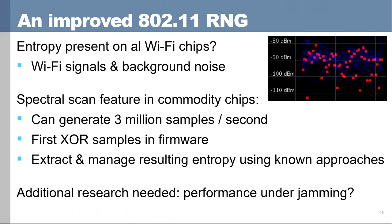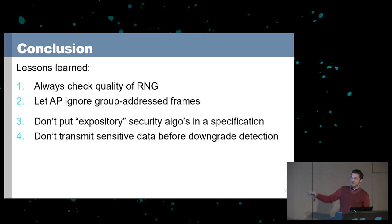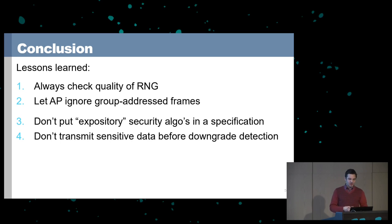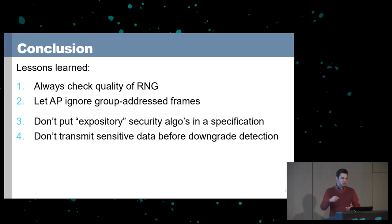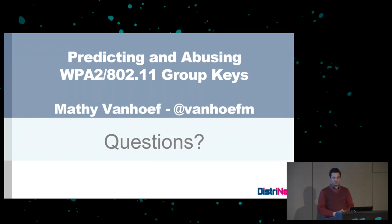That concludes my talk. A few important lessons: if you have an RNG, always check the quality of the output; don't put bad example algorithms in standards — what you put there should be good, otherwise reference an external source. To defend against the traffic decryption attack, the access point should ignore frames received on a broadcast MAC address, or not forward unicast frames sent on a broadcast MAC address. Regarding the handshake protocol, avoid sending sensitive data before protecting against downgrade attacks. If there are any questions, feel free to ask.